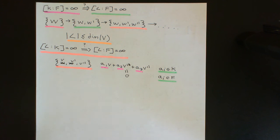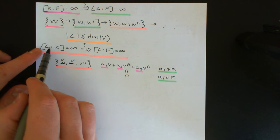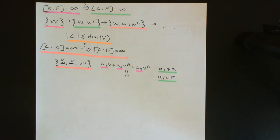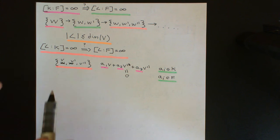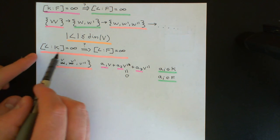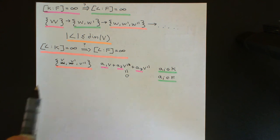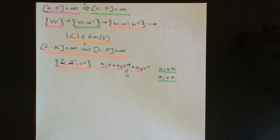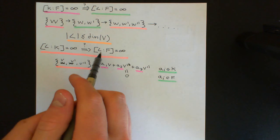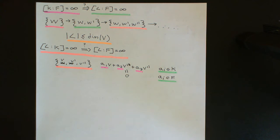So any set of linearly independent vectors in L over K is still linearly independent when we view L as a vector space over F. Because this is an infinite field extension, we can construct arbitrarily large linearly independent sets in L over K, and these are also arbitrarily large linearly independent sets in L over F — which contradicts L over F having finite dimension. Therefore it must have infinite dimension.